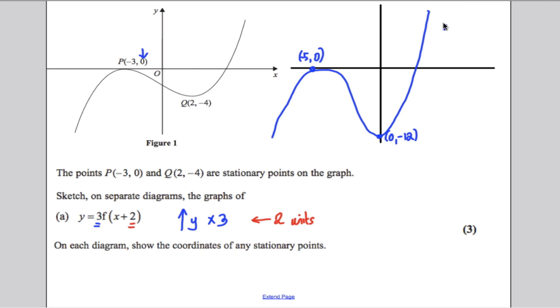One mark for the shape, which stays about the same, second mark for stating where P goes, and third mark stating where Q goes, and you must state that on there. You can't just leave it for the examiner to work out. You put the coordinates on yourself.